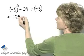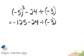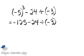And then minus 24 divided by negative 3. What are our choices now? We have subtraction and we have division. Division is to be performed first by order of operations.